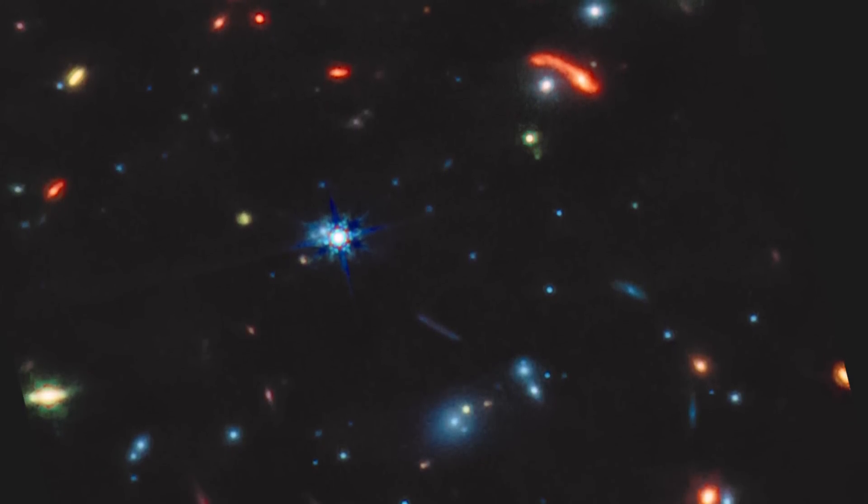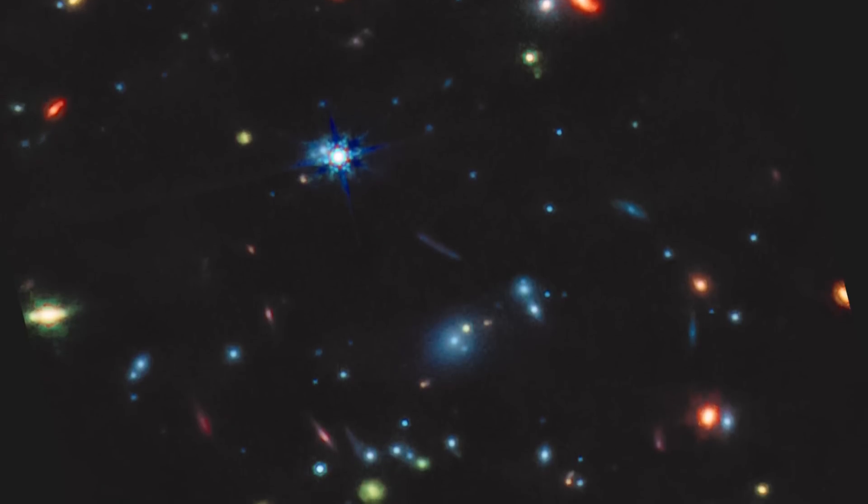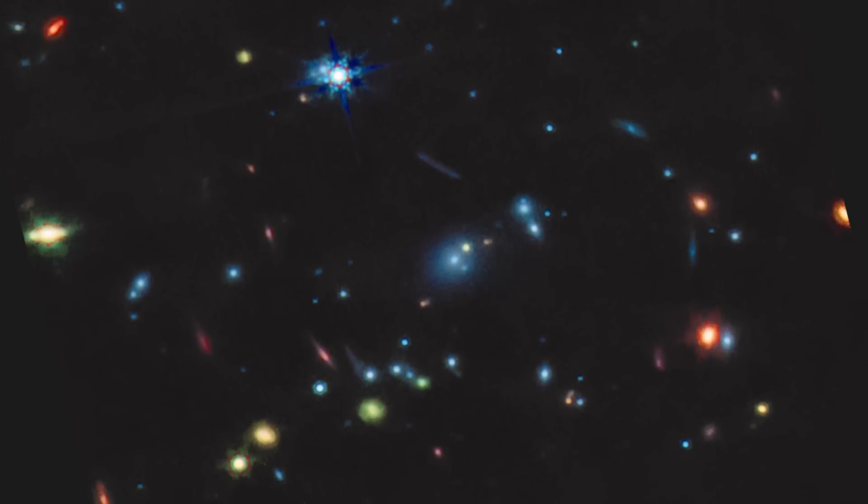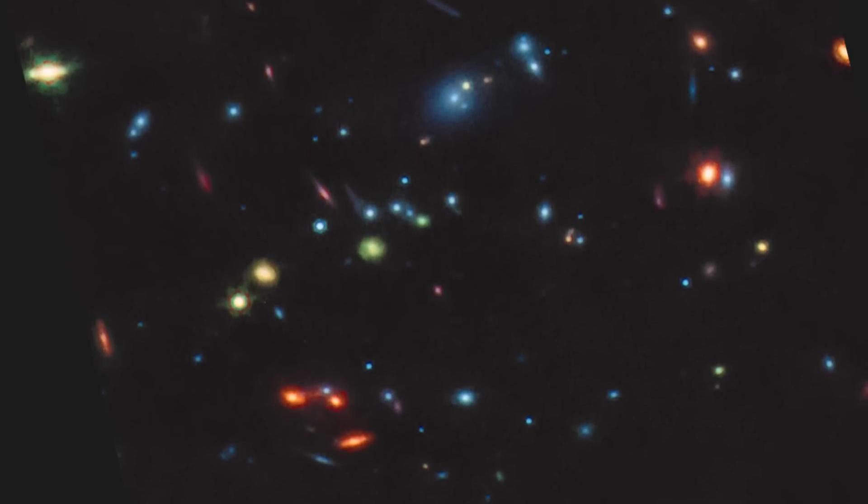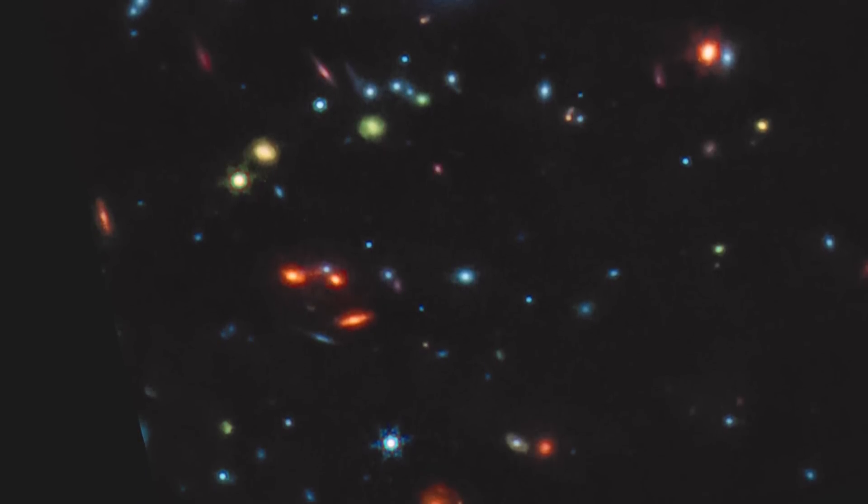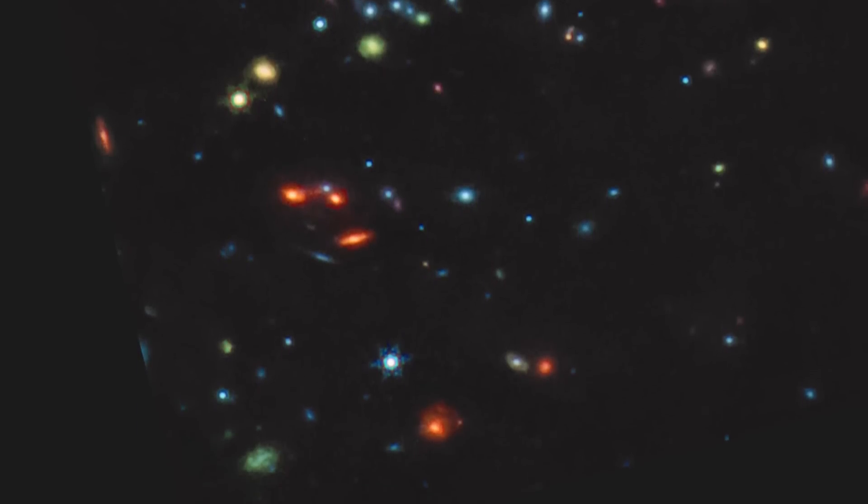This is because stars, and hence galaxies too, are much brighter in shorter wavelengths of light, so switching to mid-infrared from near-infrared brings a noticeable change and decrease in brightness. There's also the reduction in resolution that comes with longer wavelengths as well.